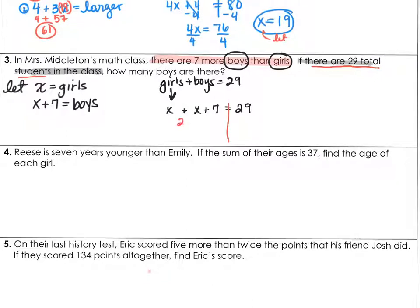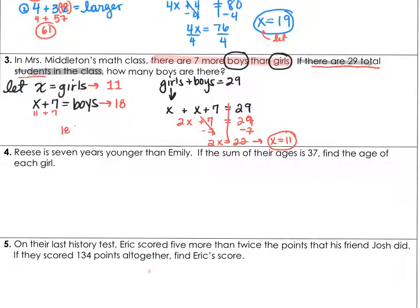Now we'll solve the equation. 2x plus 7 is equal to 29 — subtract 7, we get 2x is equal to 22, with x equaling 11. Take this back to your let statement: x is 11, so that means girls is 11, and boys is 11 plus 7, so boys is 18. There are 18 boys, because they specifically asked us how many boys are there.